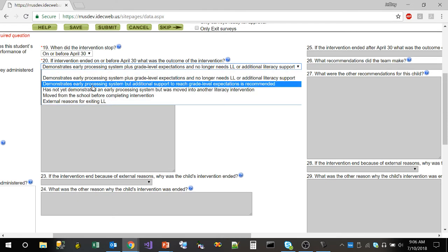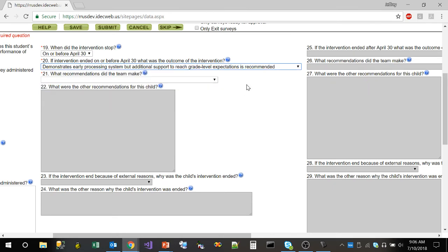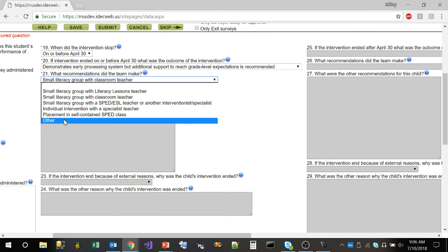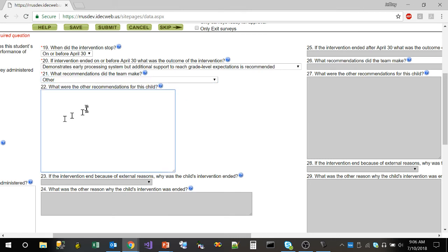But for example, if they go down here and we select the option where there are some additional recommendations, 21 will become available and the teacher can specify what those recommendations are. If they happen to select other, they will be asked then to provide a little explanation of what the other recommendations are.